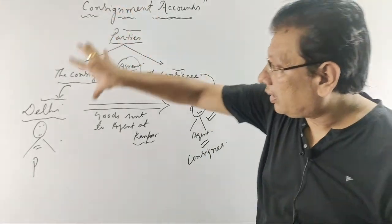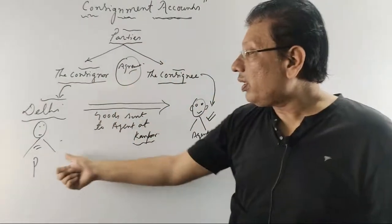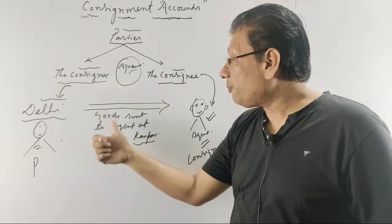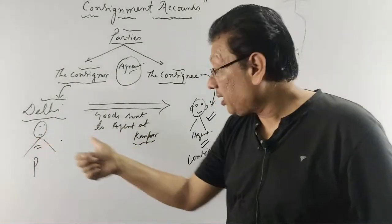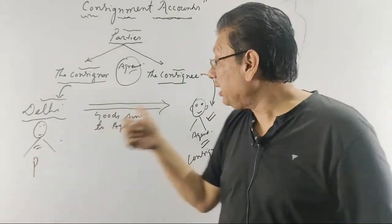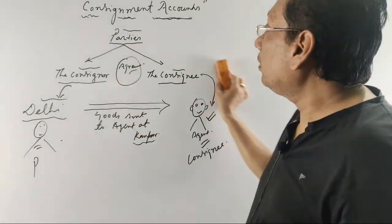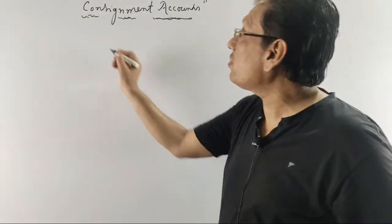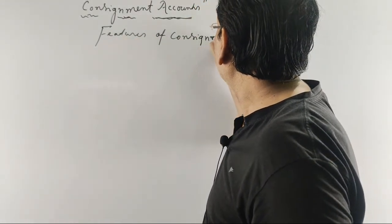There are always two parties to the consignment: number one, the principal or consignor, and number two, the agent or consignee. The consignor dispatches goods to his agent to be sold at his own risk — the principal's risk. The goods will be sold by the agent, and the entire risk on the goods remains with the consignor. The consignee earns commission. Now let us conclude the features of consignment.